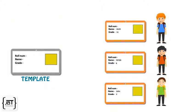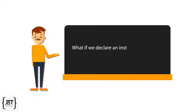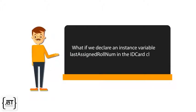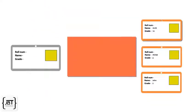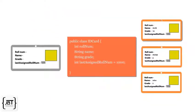Suppose we want to assign role numbers sequentially. The first ID card gets role number 1001, next gets 1002, and so on. For this, we will need to store the last assigned role number. What if we declare an instance variable last assigned role number in the ID card class? If we do this, each object of the ID card will store its own value for the last assigned role number.